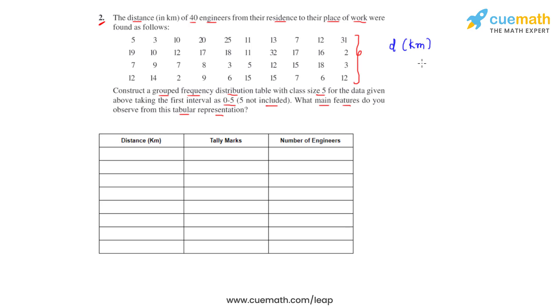So the classes will go on like 0 to 5, 5 to 10, 10 to 15, 15 to 20, 20 to 25, 25 to 30, 30 to 35.